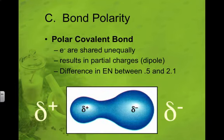So a polar covalent bond is where the electrons are not shared equally. And that's because you have one atom that is much more electronegative than the other atom. And that will result in the partial charges, which is also called a dipole.